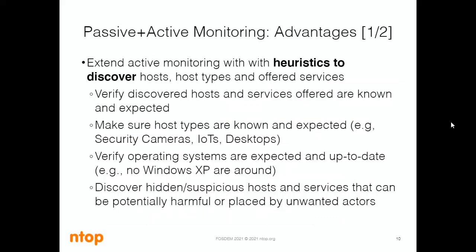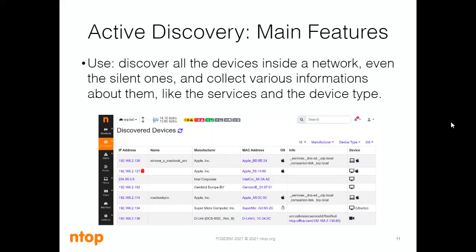Thanks to passive plus active monitoring, we can extend the active monitoring with heuristic host discovery, host types, software as a service, and so on, and we can have a measured view of the network. But here we have a problem: simple active monitoring cannot find hidden networks. This problem is solved by active discovery. Active discovery is used to discover all the devices inside the network, even the silent ones, and collect different information on them.